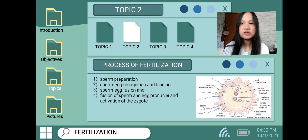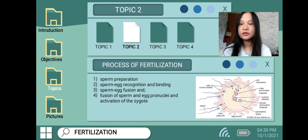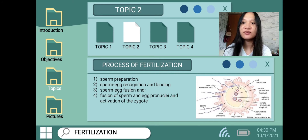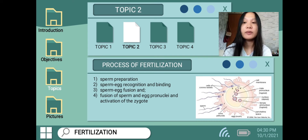When the sperm cell reaches the egg cell, the plasma membranes of the two cells fuse together, and the sperm releases its genetic material into the egg. The third step is sperm-egg fusion — the fusion of the male and female gametes. The process involves the fusion of an oocyte with a sperm, creating a single diploid cell known as the zygote, from which a new individual or organism will develop.